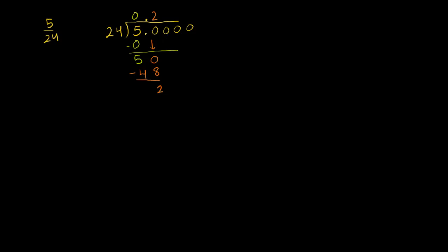Bring down this 0 right here. 24 goes into 50 two times. 2 times 24 is 48. Now we subtract. 50 minus 48 is 2. Bring down another 0. We're going to keep bringing down 0's until we have no remainder. 24 goes into 20 zero times. 20 minus 0 is 20. Let's bring down another 0.